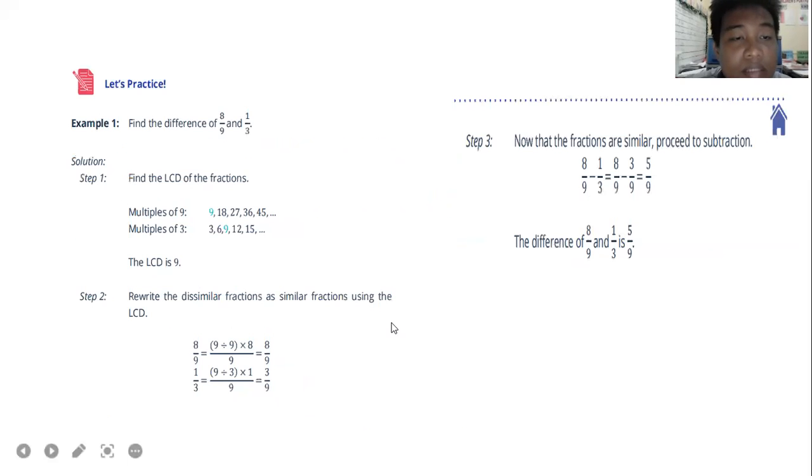Example 1: Find the difference of eight-ninths and one-third. Step one: find the LCD. It's up to you what method you will use, either listing method or using factors. Step two: Rewrite the dissimilar fractions as similar fractions using the LCD. Nine divided by nine times eight equals eight-ninths. Nine divided by three equals three, times one equals three-ninths. Eight-ninths minus three-ninths equals five-ninths. So the difference of eight-ninths and one-third is five-ninths.